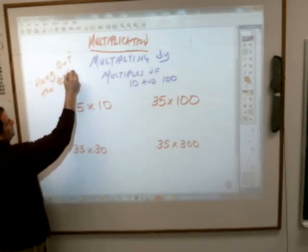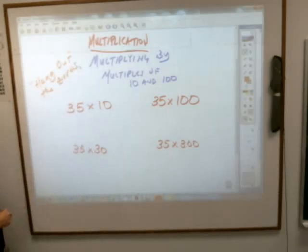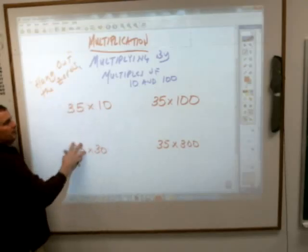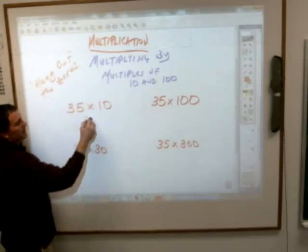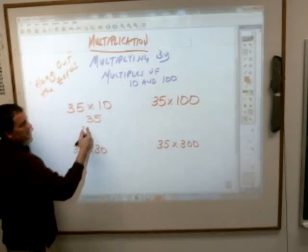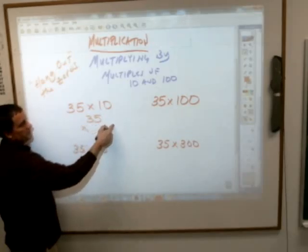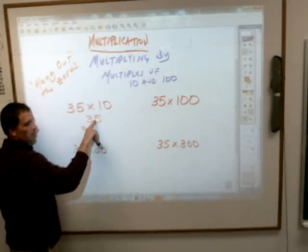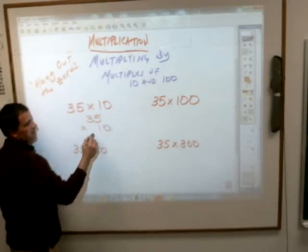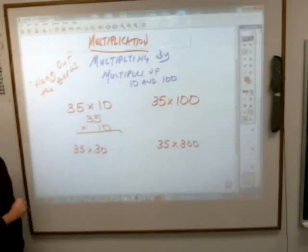I'll show you what that means. When you write this problem on your paper, write it as 35 times—and instead of putting the 10 directly under the 35, move it so that the zero actually ends up out past the number like this.